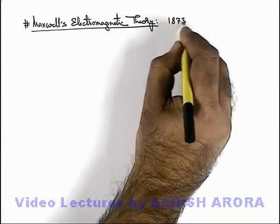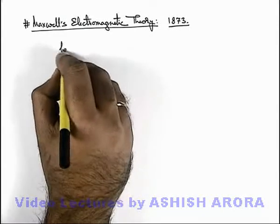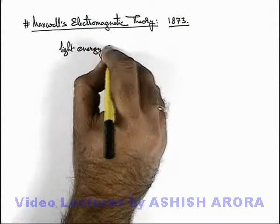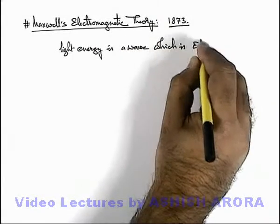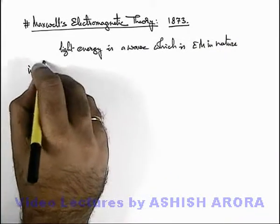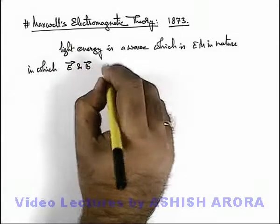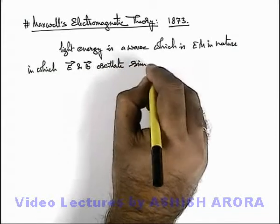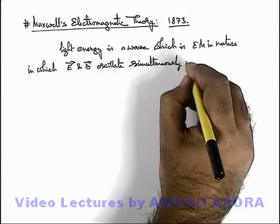In 1873, the theory was given by Maxwell, and it was said that light energy is a wave which is electromagnetic in nature, in which electric field vector and magnetic field vectors oscillate simultaneously in planes.